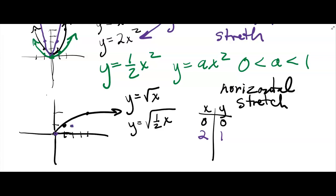Now it's twice that for the x-value. If I want a nice number I can take the square root of, I'd have to put in 8, because half of 8 is 4, and I can take the square root of 4 and get 2. So my old output that was at (4, 2) is now at (8, 2). So it's stretching — this is a horizontal stretch. Think about what you have to put in for x to get your old outputs. Try this on Desmos and you'll see it.